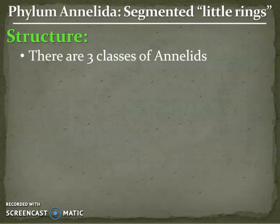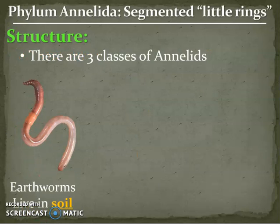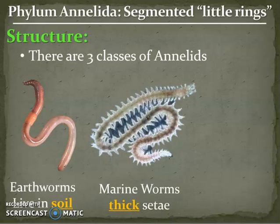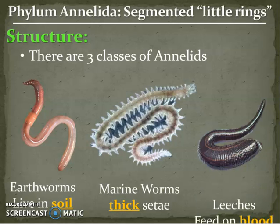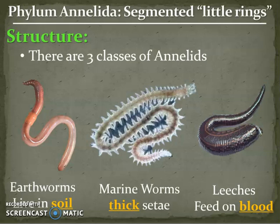There are three classes of annelids. The first one is earthworms. The second is marine worms, or ones that live in the ocean, and they have really thick setae. And our last group are leeches, and they feed on blood.